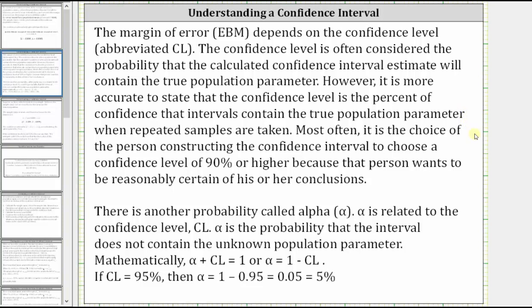Most often, it is the choice of the person constructing the confidence interval to choose a confidence level of 90% or higher because that person wants to be reasonably certain of his or her conclusions.